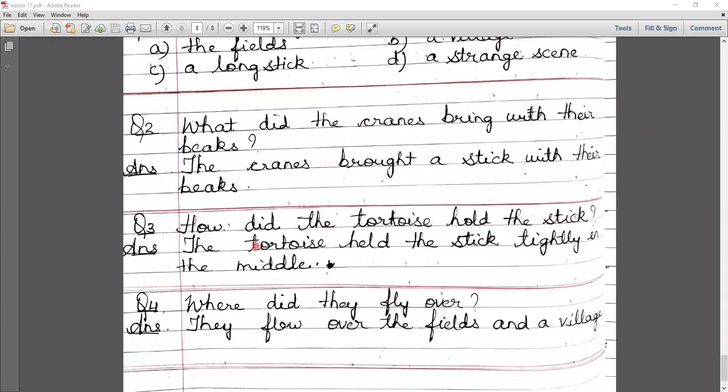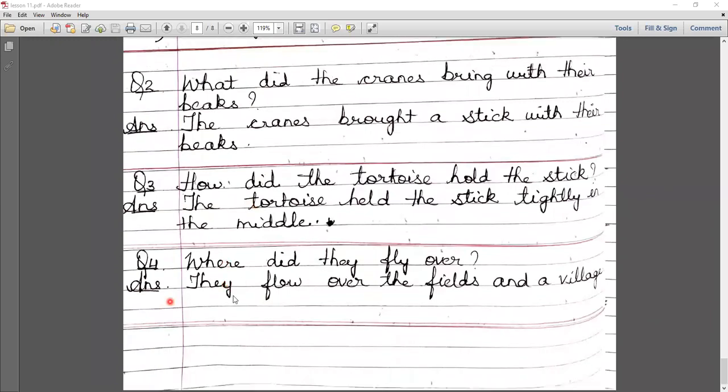Question number three: how did the tortoise hold the stick? The tortoise held the stick tightly in the middle. Question number four: where did they fly over? They flew over the fields and the villages. Question number five: what did the villagers do?